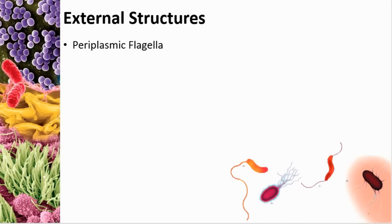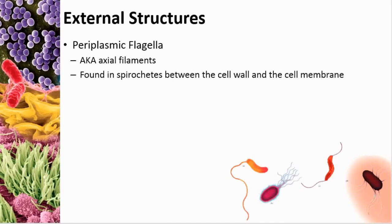A special arrangement called periplasmic flagella — also known as axial filaments — are found only in spirochetes. They're located between the cell wall and the cell membrane, not in contact with the outside environment. Rather than directly pushing through the surrounding fluid, they cause the organism to wiggle, helping it move in a different way.